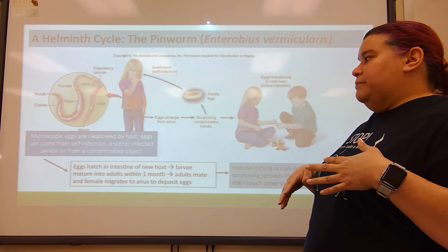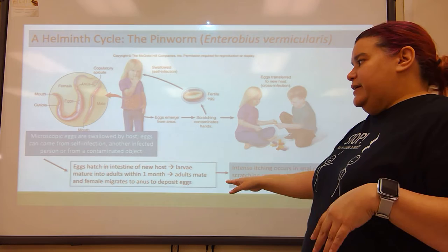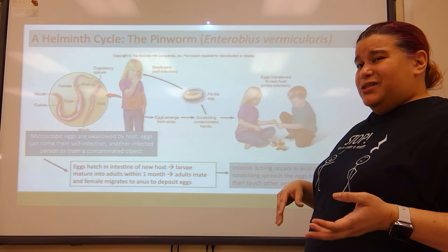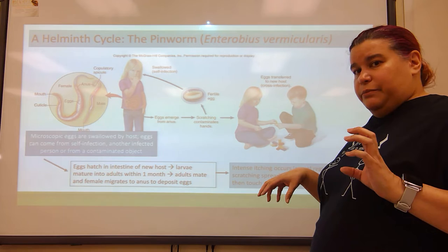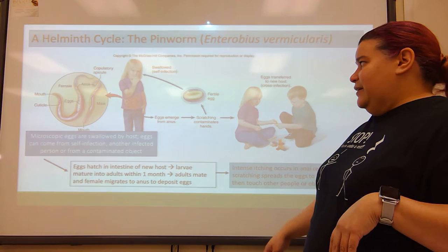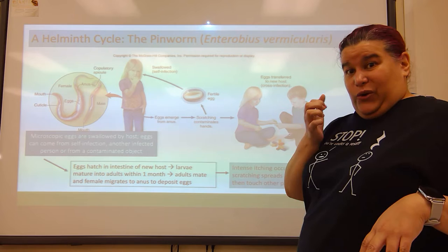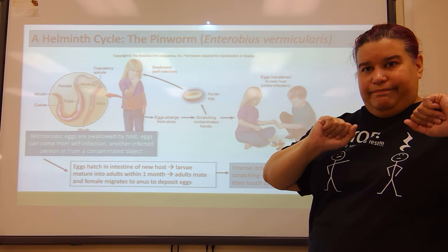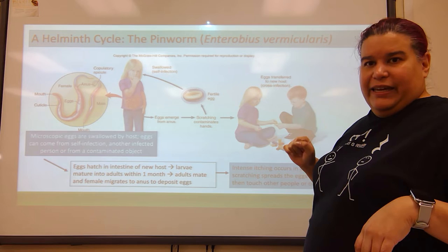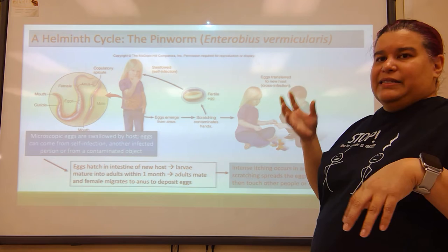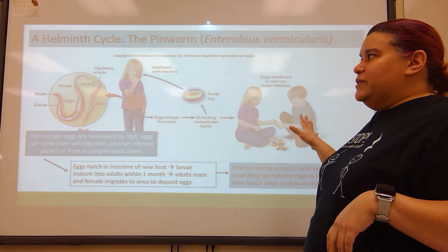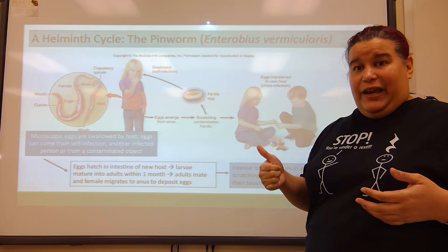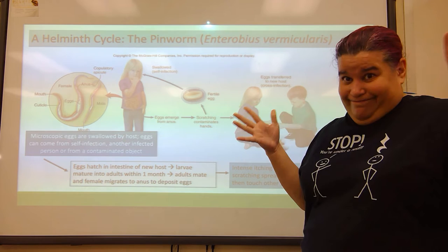Eggs can also come from another infected person or from a contaminated object. The eggs hatch in the intestine of the new host. Larvae will mature into adults within about a month, and the adults mate. The female migrates to the anus of the infected individual and deposits eggs. The eggs are itchy, so kids tend to scratch, which contaminates their hands. Now they're playing with another kid, touching blocks and things — and that kid puts his hand in his mouth. It's spreading.